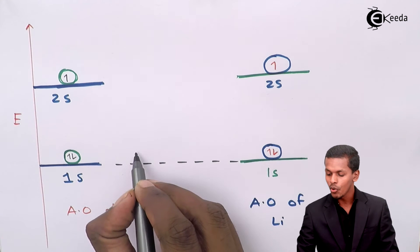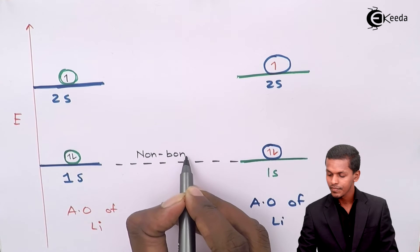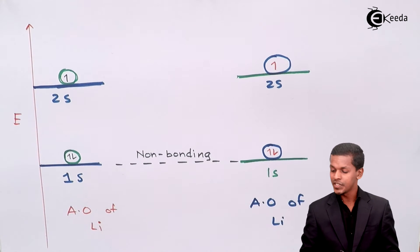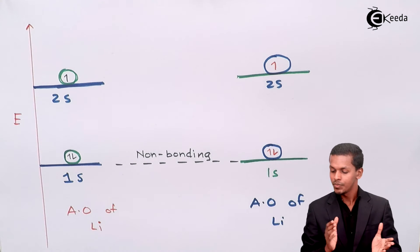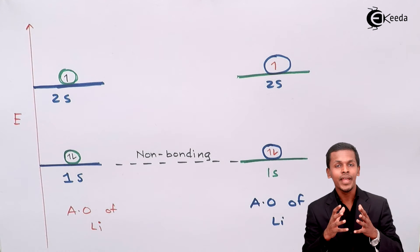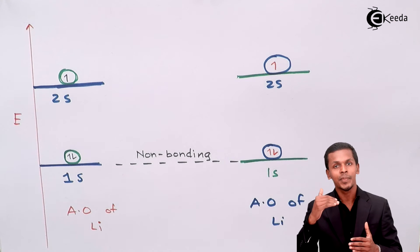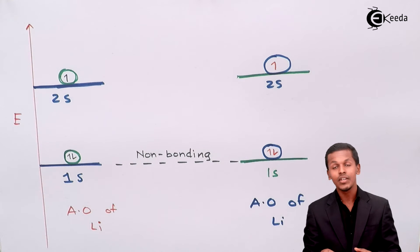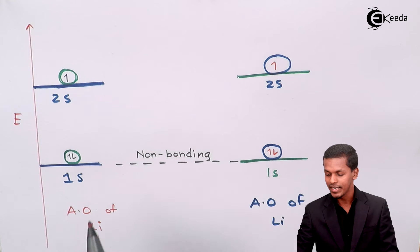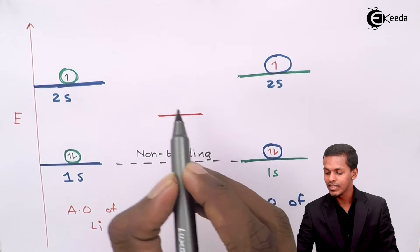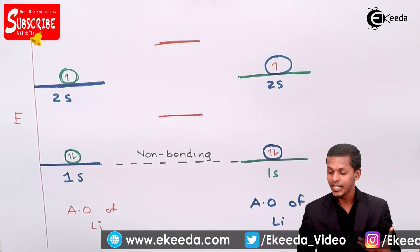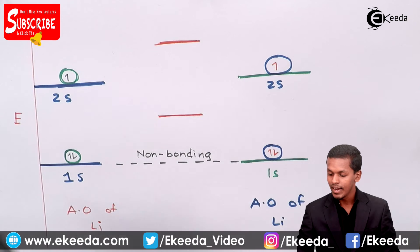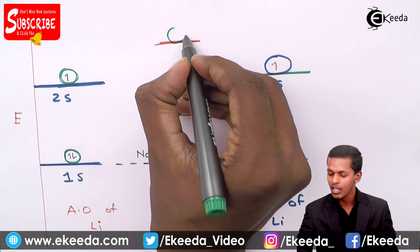Therefore, these orbitals are known as non-bonding orbitals. Now talking about the 2s orbital at the outermost shell — the total number of 2s orbitals from both atoms is two. By combining them, two molecular orbitals are created: one at lower energy, which is the bonding orbital, and one at higher energy, which is the anti-bonding orbital. One molecular orbital will be at the lower energy level while the other will be at the upper energy level.